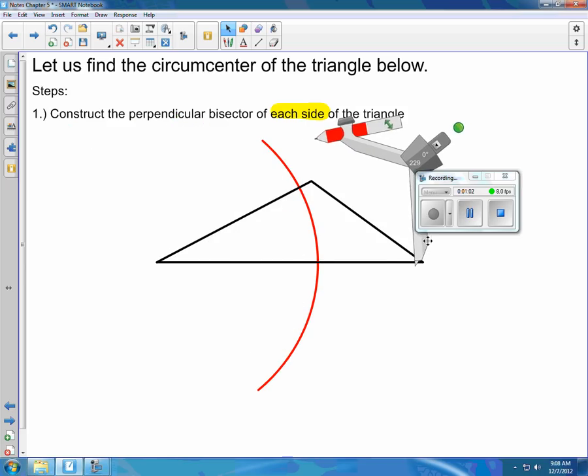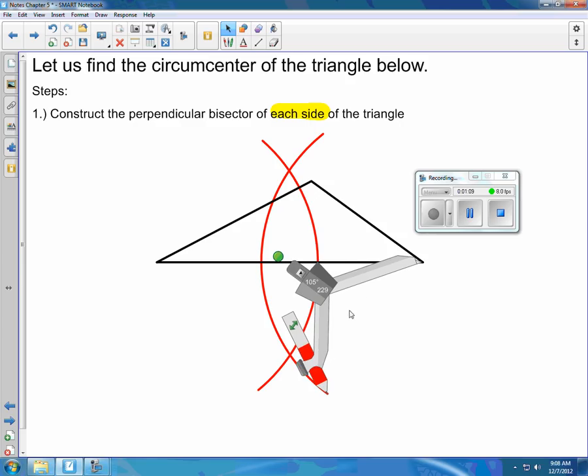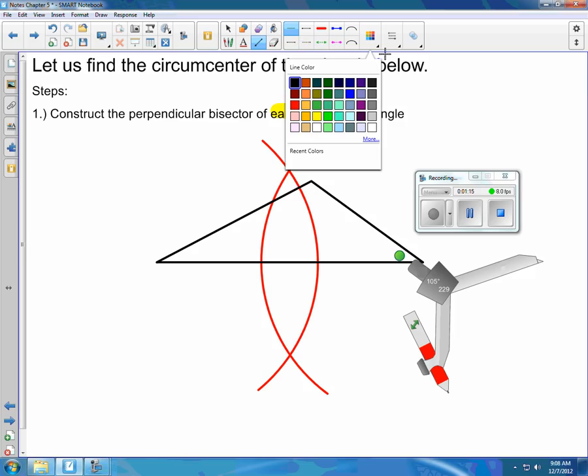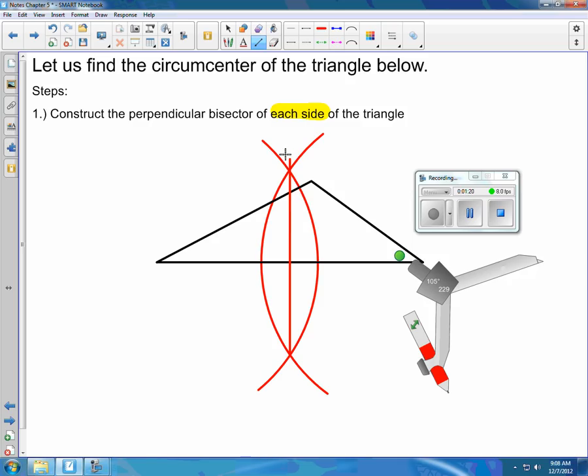Flip it. Go to the other end point of the side. Don't change the opening of your compass. Again, go above and below. Where those two arcs cross, that is two points that are on that perpendicular bisector. As we can see here, here's the perpendicular bisector.